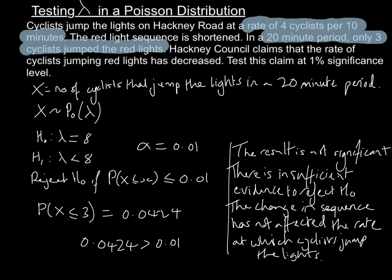Let's move on to a second type of question. In the previous example we were looking at a lower tail test, where we would reject H0 if the probability fell into the lower tail region. What I want to now look at is a two-tail test.